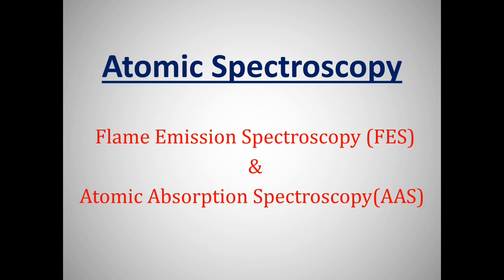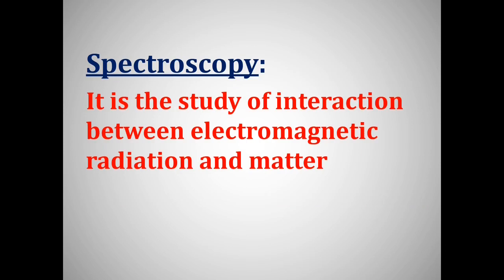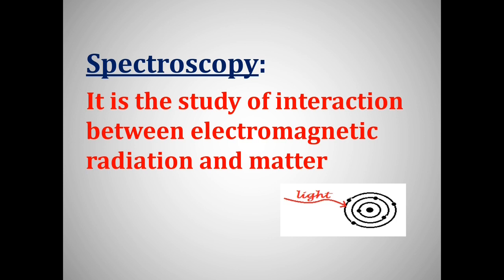Let us talk about atomic spectroscopy. This term is divided into two parts: atom and spectroscopy. Spectroscopy is defined as the study of interaction between electromagnetic radiation and matter. That means in spectroscopy we try to understand what happens when electromagnetic radiation falls on matter. As shown in the diagram, light is falling on a matter and when that happens it results in some kind of interaction, which produces certain results, and the study of those results is known as spectroscopy.